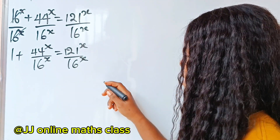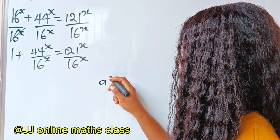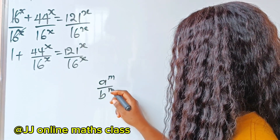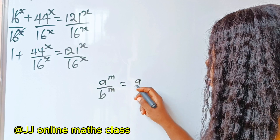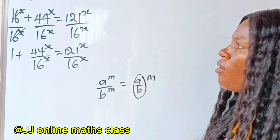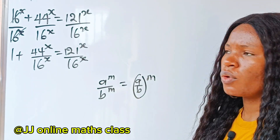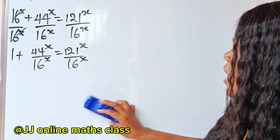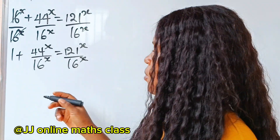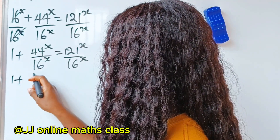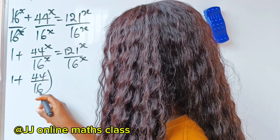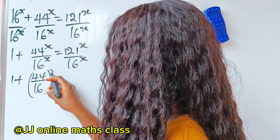Now recall that a to the power of m, divided by b to the power of m, is equal to a divided by b, everything raised to the power of m. So that is exactly what I am going to do right here. So I will write 1 plus 44 divided by 16, to the power of x, is equal to 1 to 1, divided by 16, to the power of x.